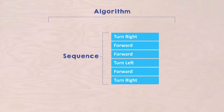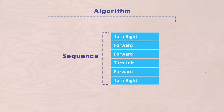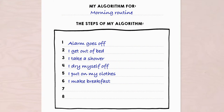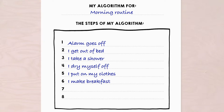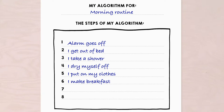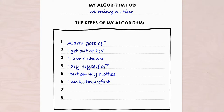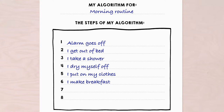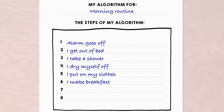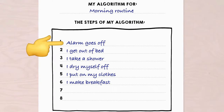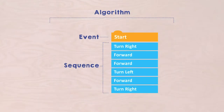But actually, there is one more thing. An algorithm often starts with a certain action. Remember the algorithm of getting up in the morning from the previous mission? When the alarm goes off in the morning, I get out of bed, I take a shower, I dry myself off, I put on my clothes, I make breakfast, and I am ready to start my day. Because the alarm goes off, I start my morning algorithm. In this case, the alarm going off is the action.